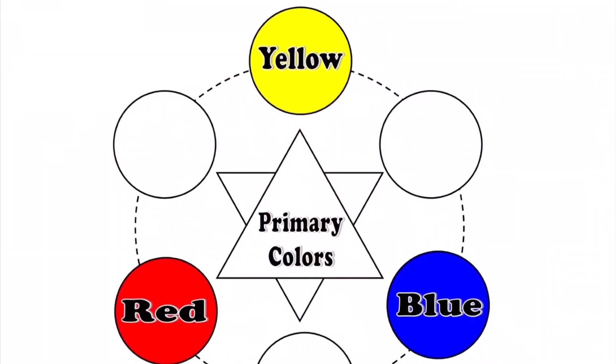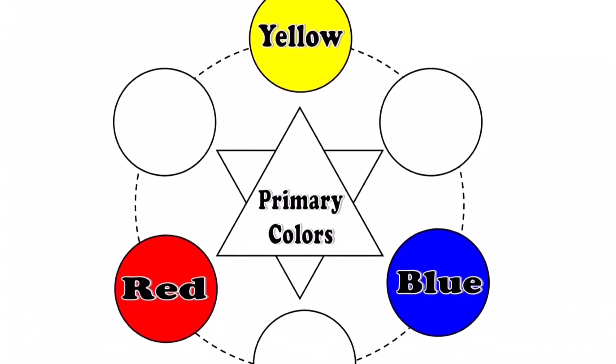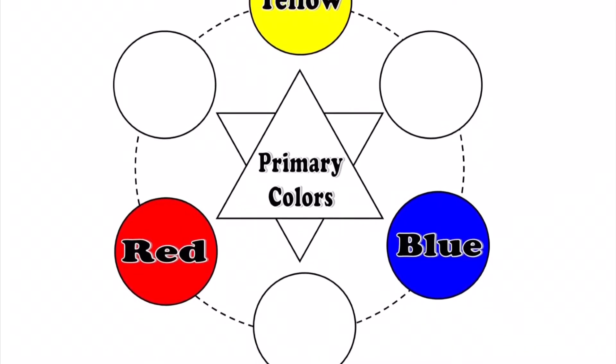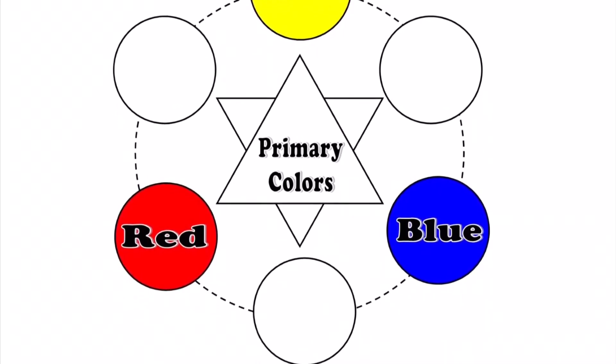The color wheel starts with the primary colors. The primary colors are yellow, red and blue. The primary colors cannot be made from other colors. However, you can use those three colors to make every color in the rainbow.